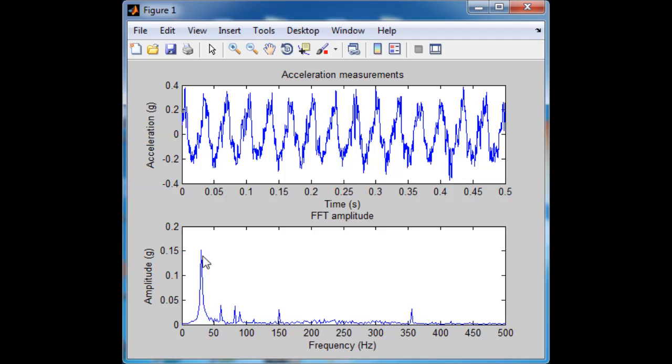And again, this amplitude plot here is showing me at a bunch of different frequencies what amplitude is present in the signal. You can see that there's a really big spike down here, and if I come up in MATLAB and click on the data cursor, and then click on that peak, I get 29.3 hertz.